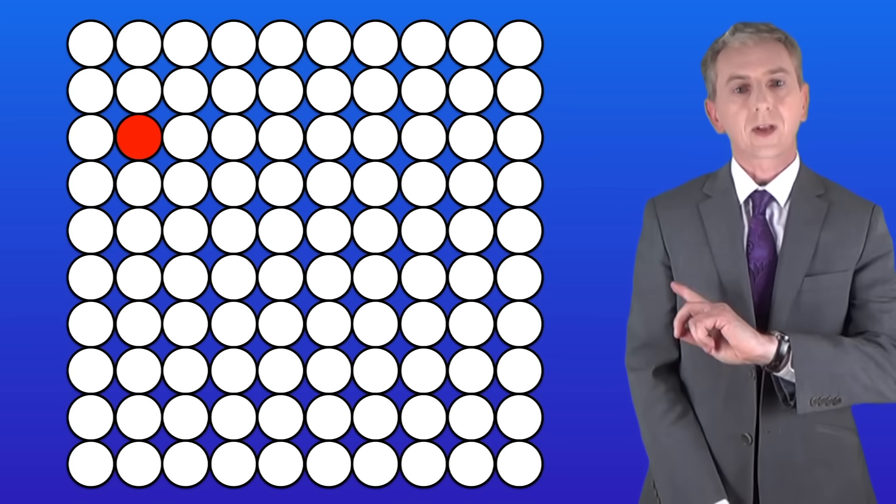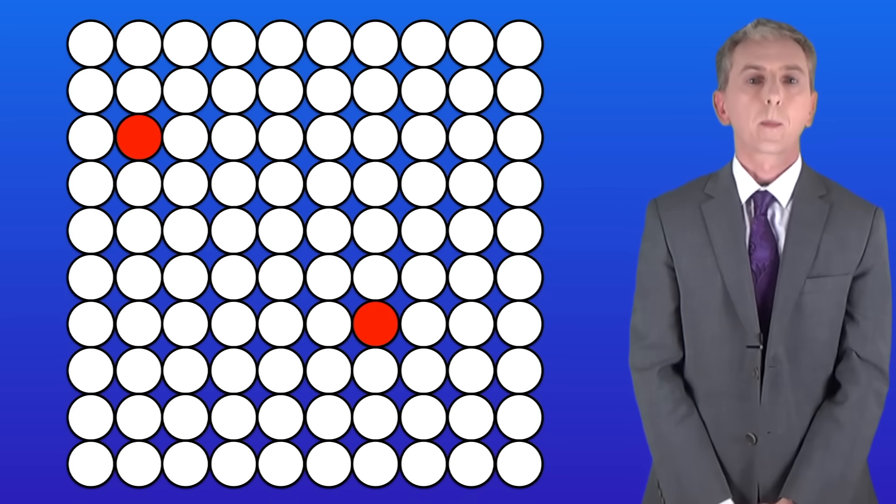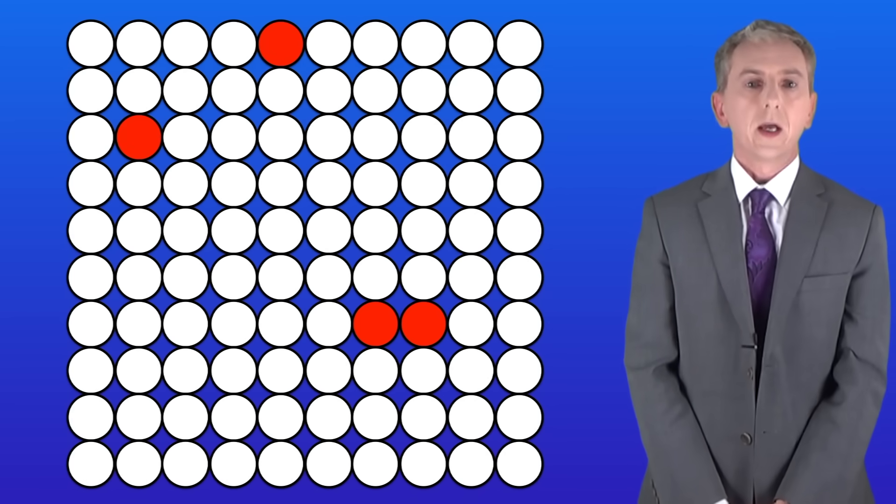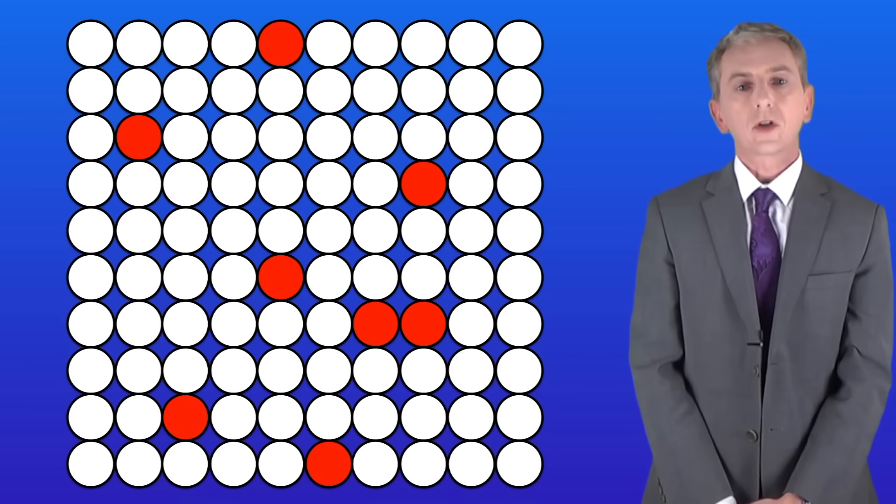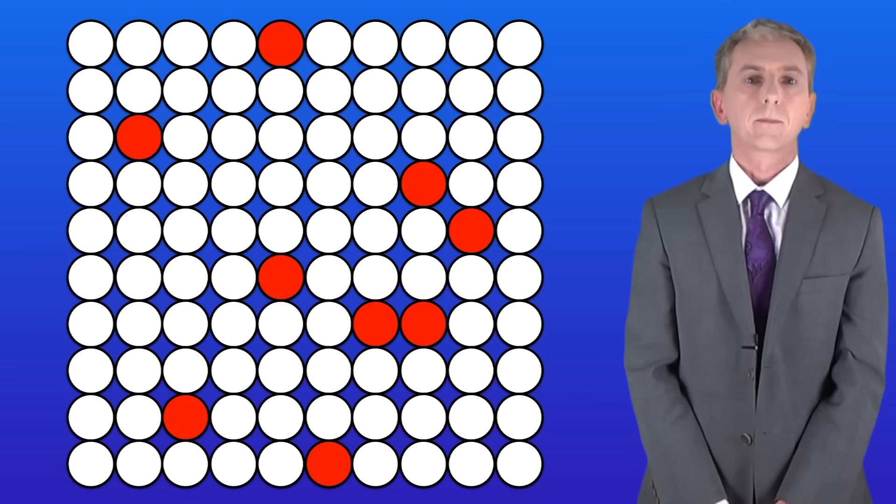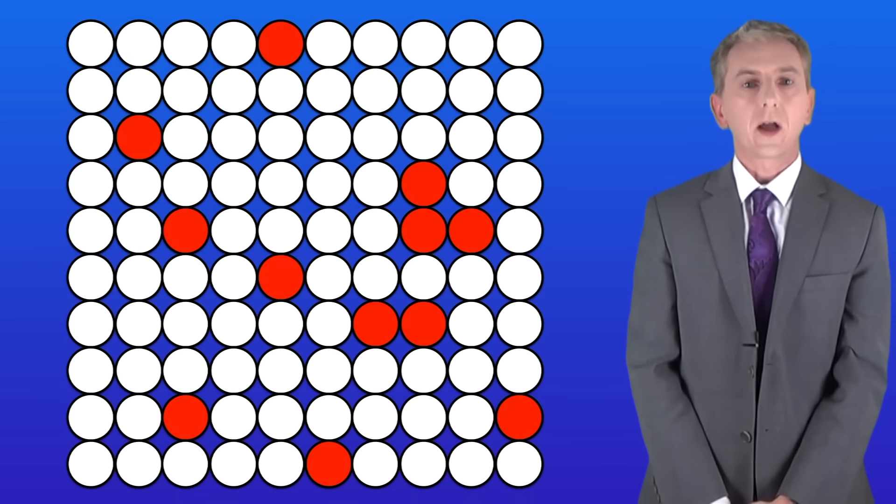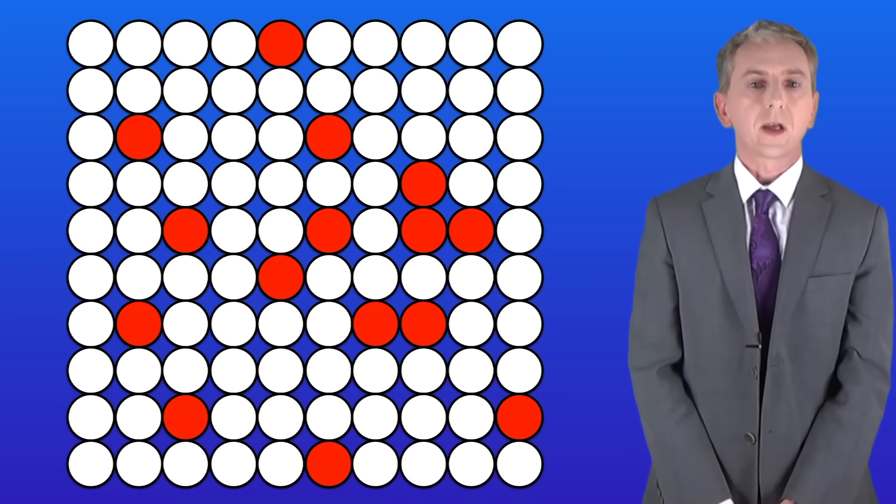I'm showing you here a sample of a radioactive isotope. The white circles represent the nuclei and when a nucleus decays I'm going to show that by turning it red. So as you can see the nuclei are decaying. Remember that this is a random process.